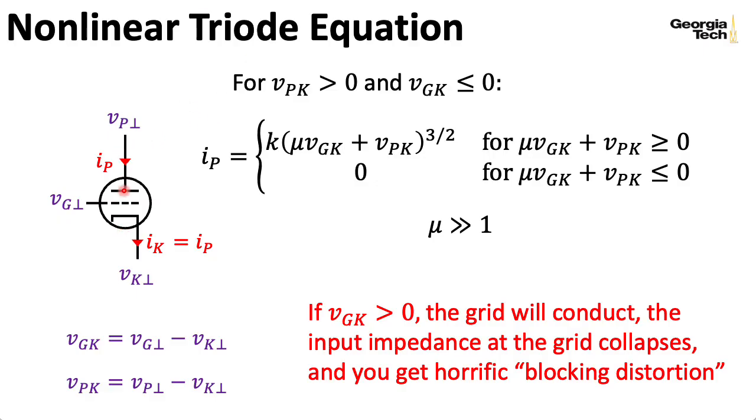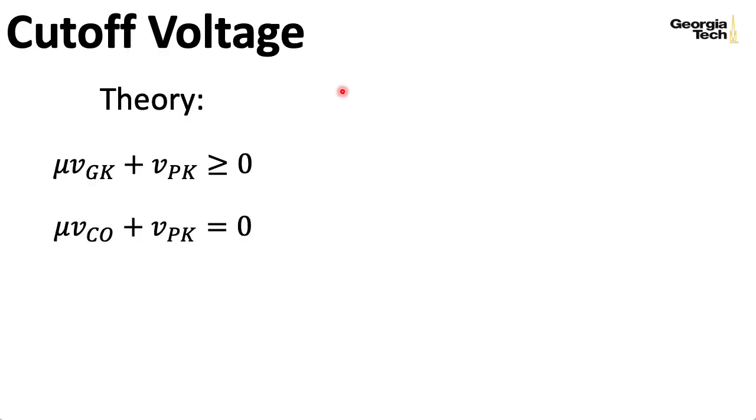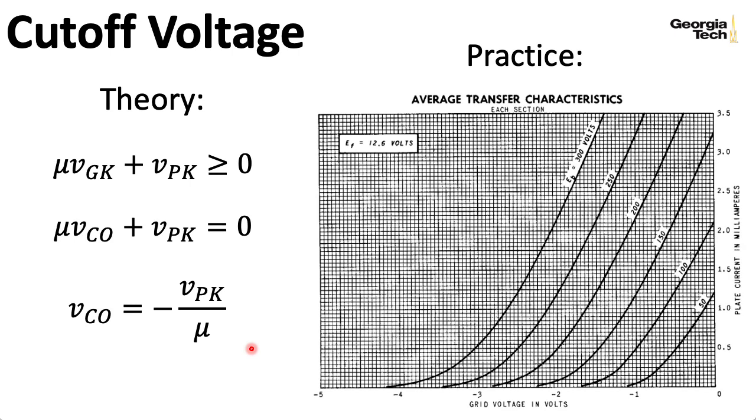Now, remember that to get current flowing, we need to have mu VGK plus VPK be bigger than zero. We can ask a question like, where is it exactly zero in order to find a cutoff voltage below which we won't get any current? So if we solve that out, we get a formula that looks like minus the plate to cathode voltage divided by our amplification factor mu. At least that's the theory. If we look at the actual curves, we see this isn't really the case in practice. So the published spec for mu for 12AX7 is 100, which is a nice number. If we take 300 and divide it by 100, that would give us 3, which would give us minus 3. But that's here, and we have 0.5 milliamps flowing.